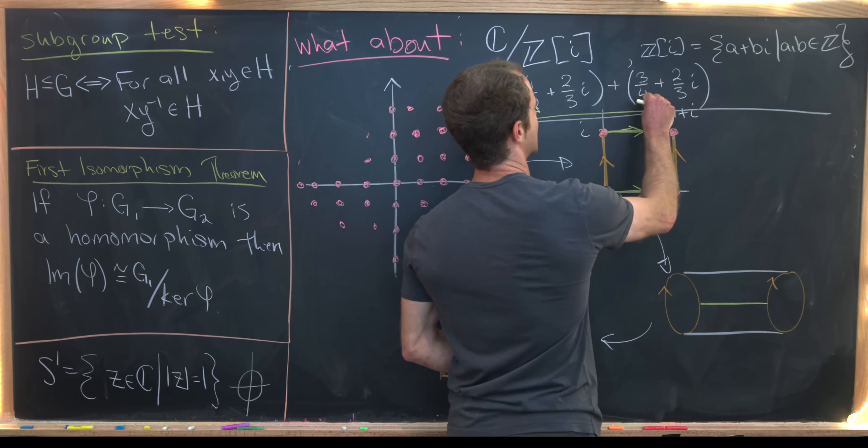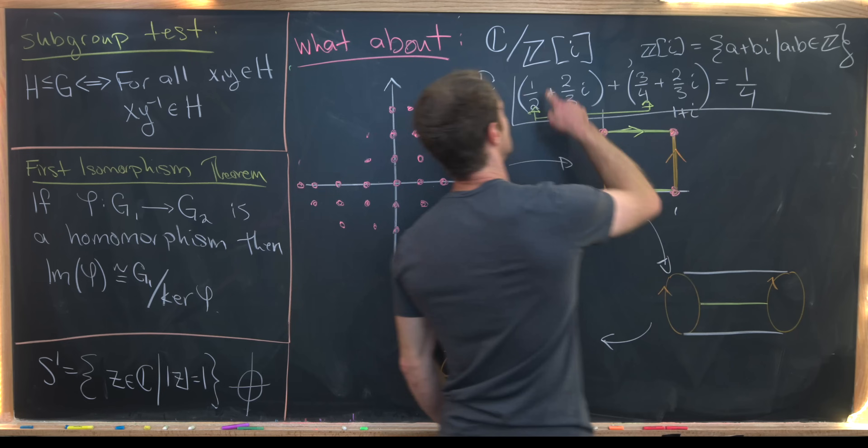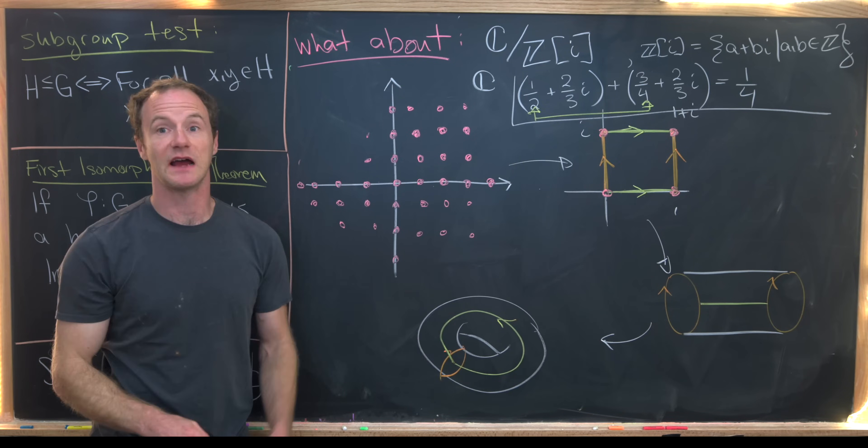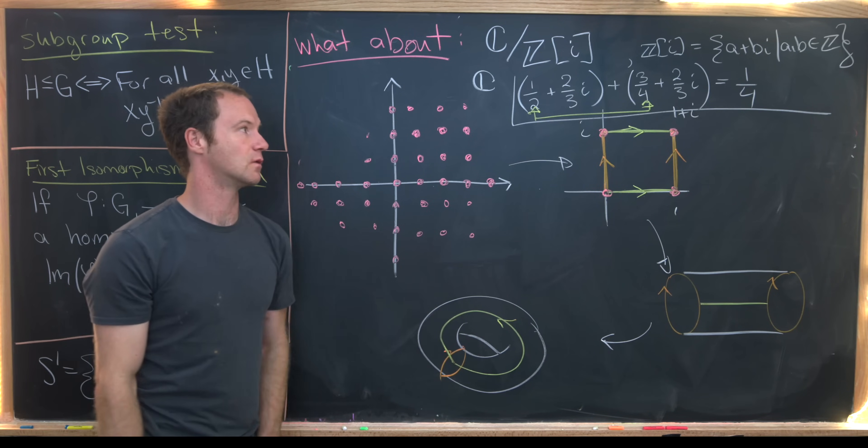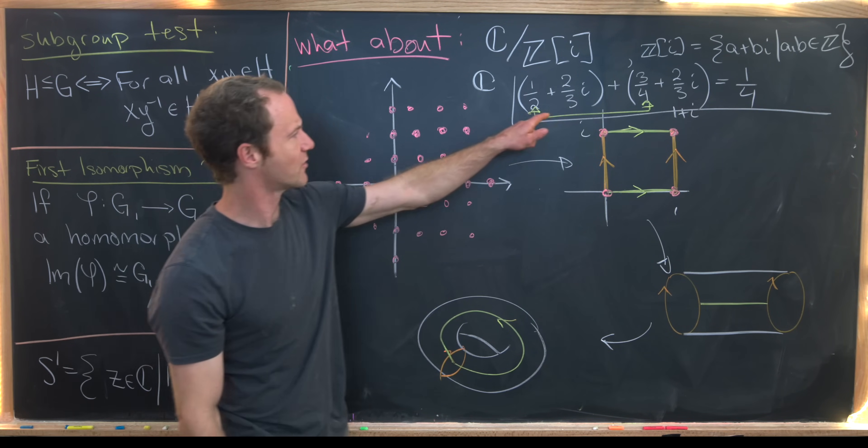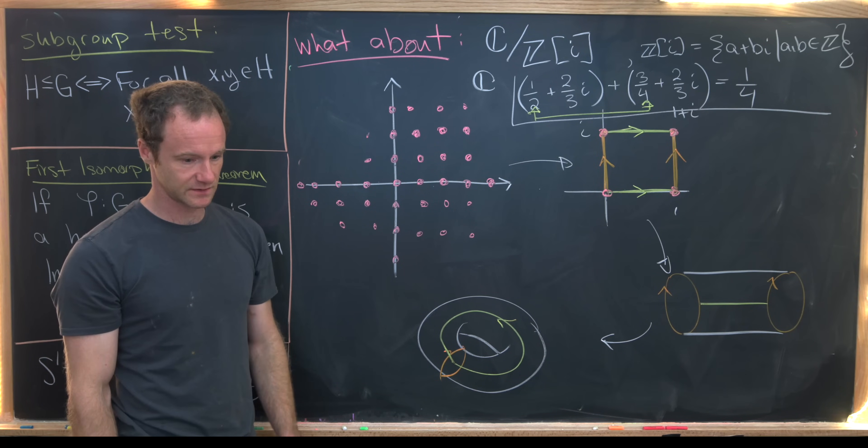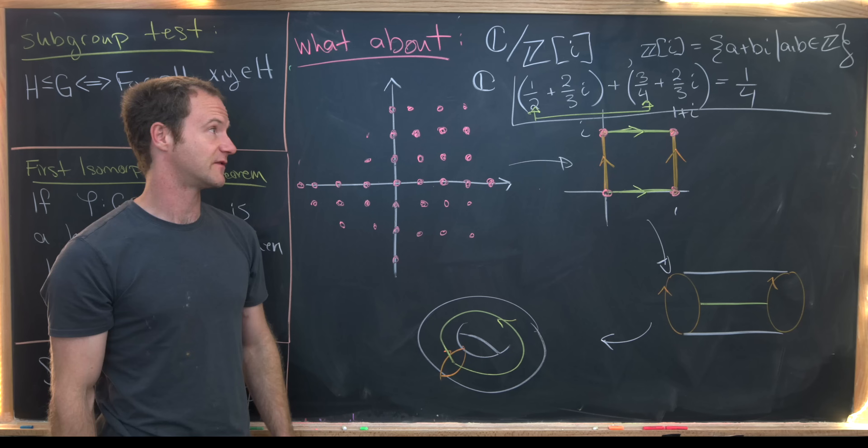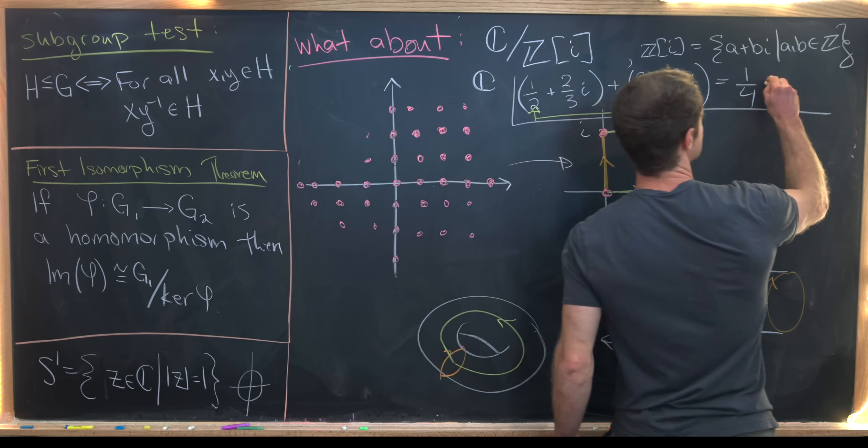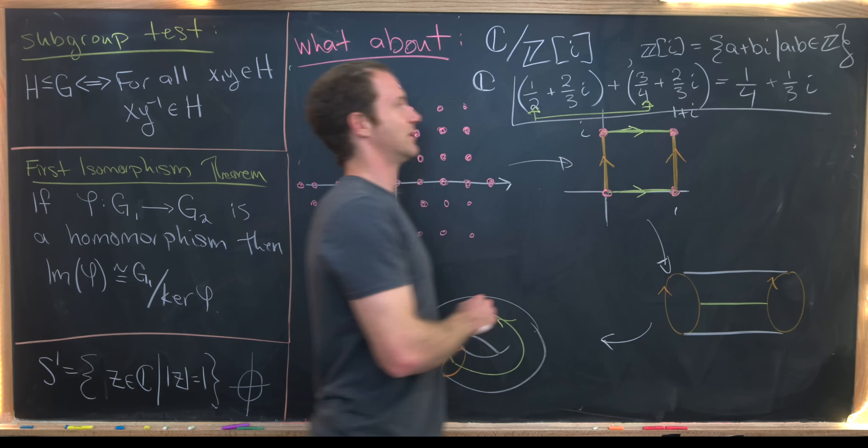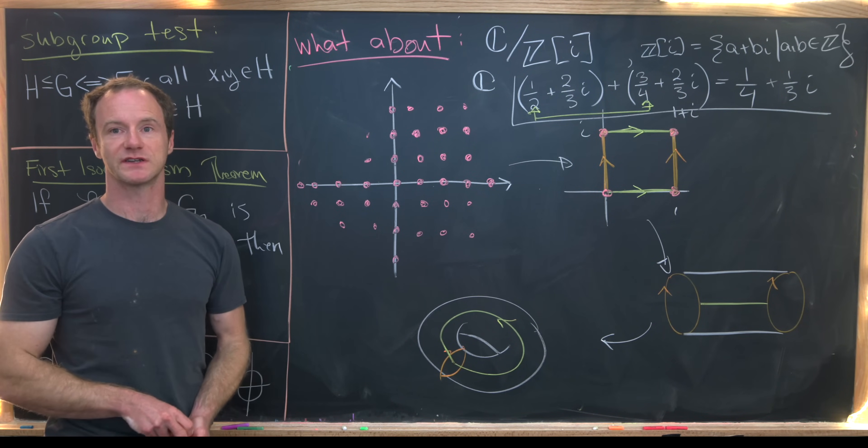So adding this guy, this guy gives us five fourths. We can subtract off an integer because we're modding out by Z adjoin i and that gives us one quarter. So I should say that equality is happening within this quotient. Furthermore, two thirds plus two thirds is four thirds. But we can subtract off an integer. Really, it's an integer multiple of i giving us one third i. So that's an example of a calculation happening inside of this quotient group. And that's a good place to stop.